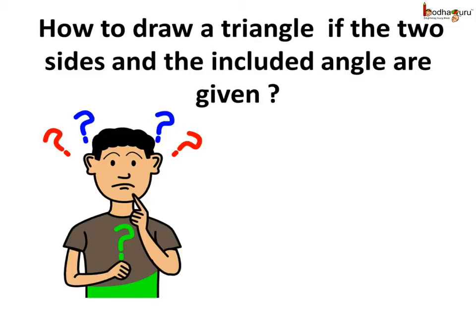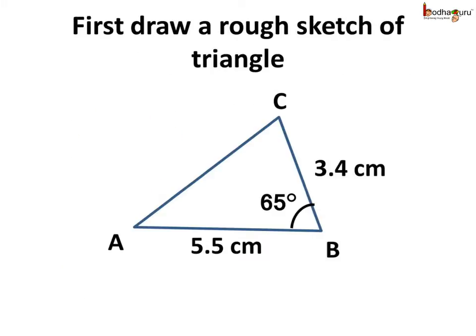Now, how do we draw a triangle if the two sides and the included angle are given? First, we draw a rough sketch of the triangle we want to draw. Assume we want to make the 5.5 cm side — that is AB — the base of the triangle. Side BC is 3.4 cm, and the angle between AB and BC is 65 degrees.